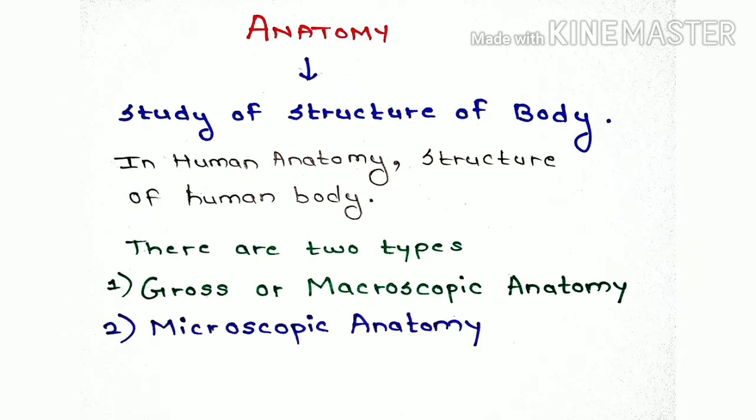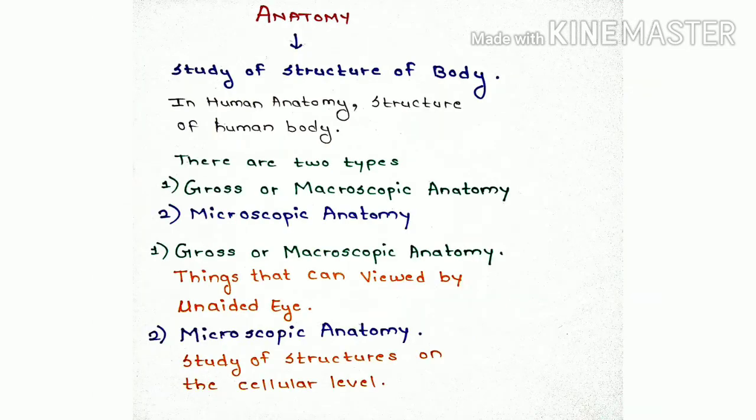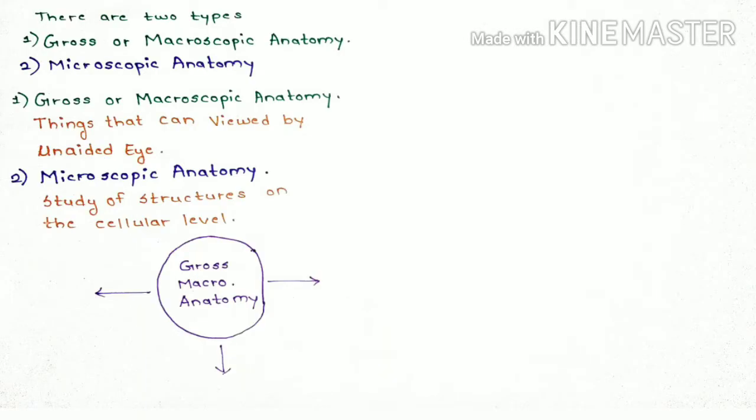Second is microscopic anatomy. Gross or macroscopic anatomy, as the name suggests, deals with things that can be viewed by an unaided eye, whereas microscopic anatomy is a study of structure on the cellular level.